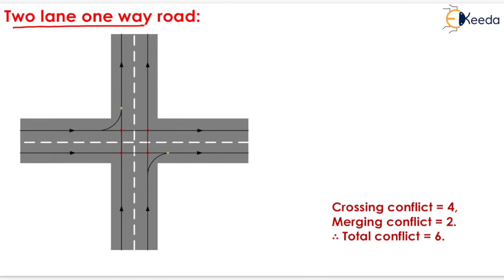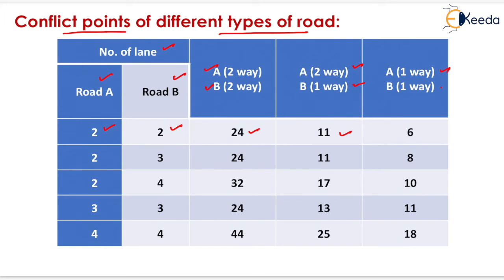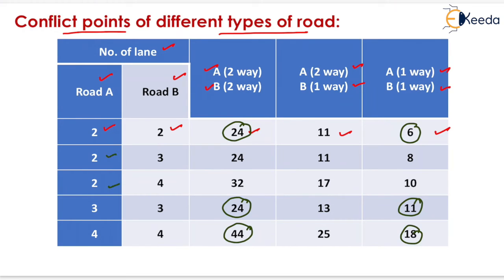For a 2-lane 1-way road, crossing conflicts equal 4 and merging conflicts equal 2, giving a total of 6 conflict points. The conflict points table lists number of lanes for road A and road B: if both roads are 2-lane 2-way, there are 24 conflict points; if road A is 2-way and road B is 1-way, there are 11 conflict points; if both roads are 1-way, there are 6 conflict points. These values are very important for GATE exams.